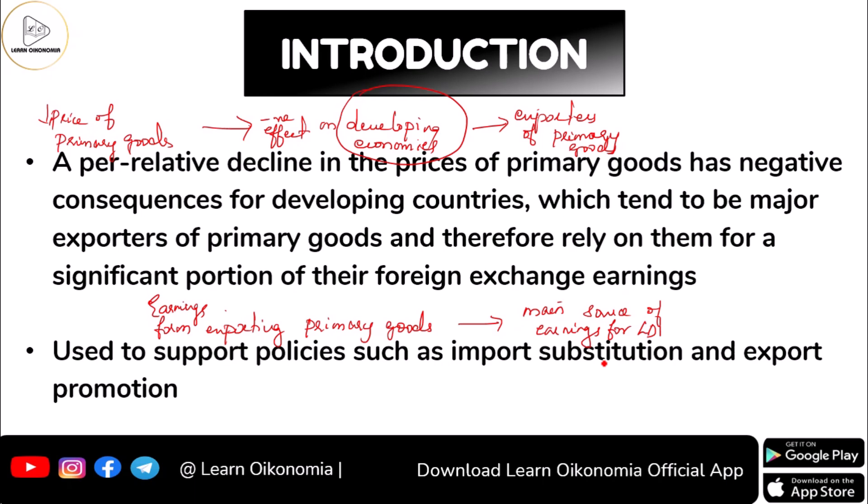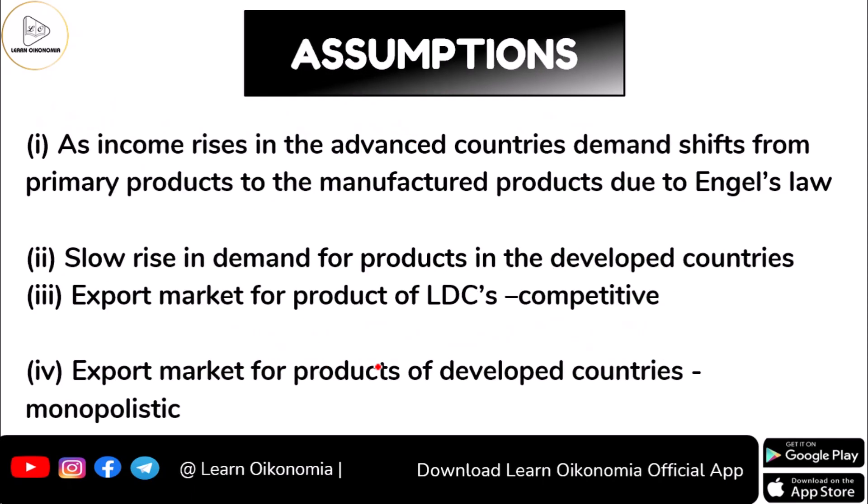The Singer-Prebisch hypothesis is used to support policies related to import substitution and export promotion. Import substitution means that instead of importing certain commodities, you produce those commodities in your own domestic territory. Export promotion means implementing policies to boost the production of commodities that you are exporting.